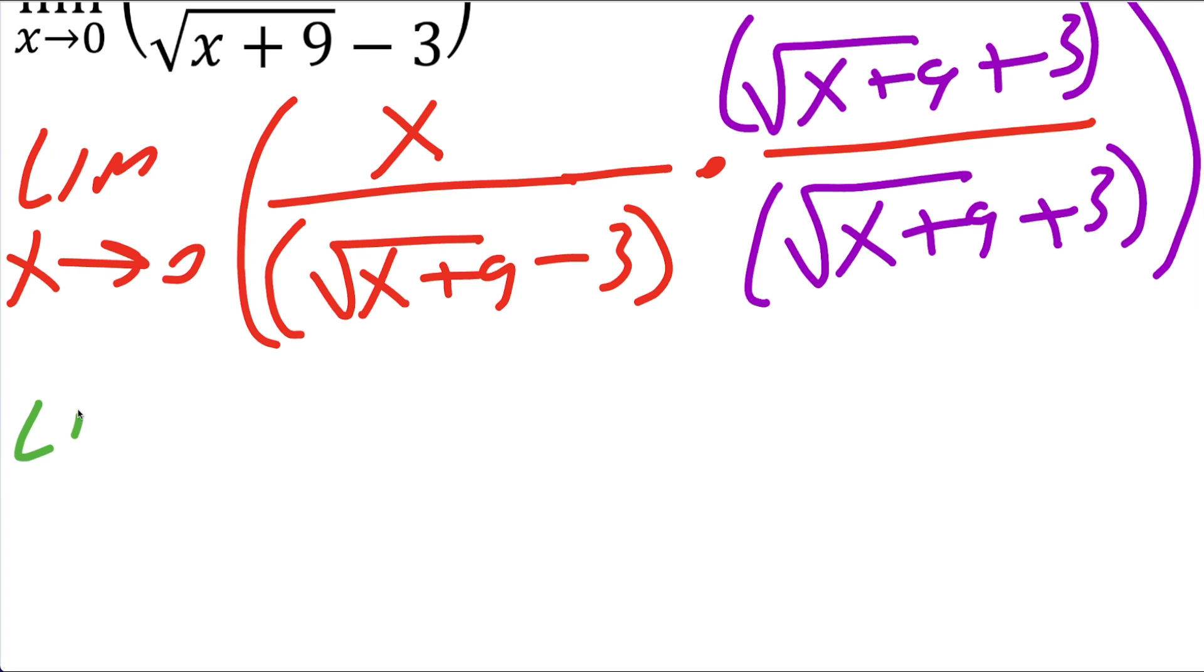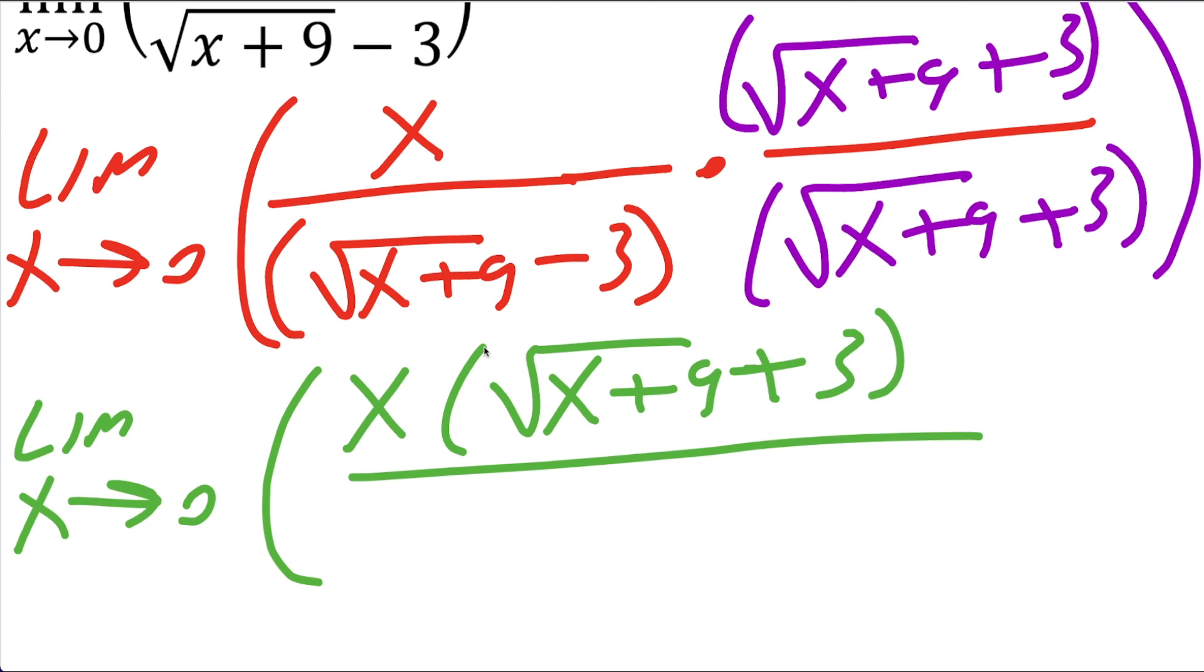So next we're going to expand this out. So we're going to get the limit of x approaching 0, parenthesis, x times the square root of x plus 9, then we have a plus 3, close parenthesis, divided by,